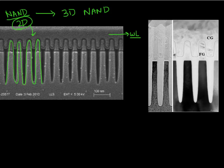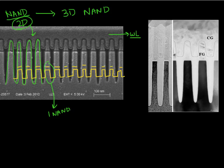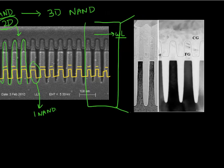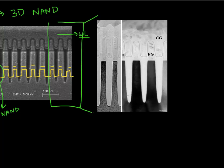Each of these is one NAND memory cell. I'm plotting this in more detail over here. This is an expanded view of a few NAND cells, showing the different parts as we discussed in our previous lecture.